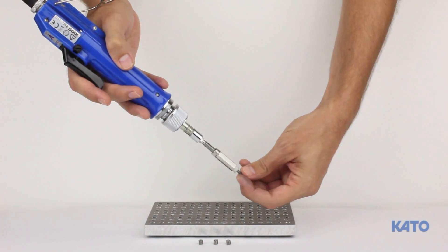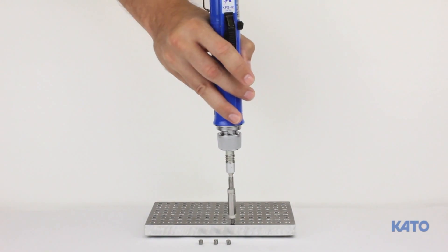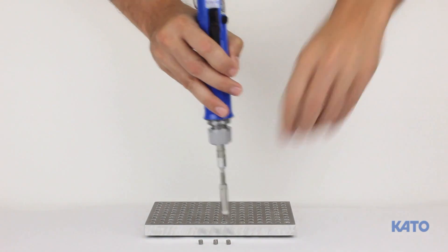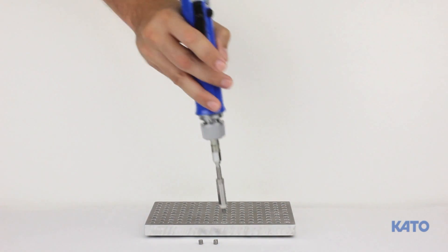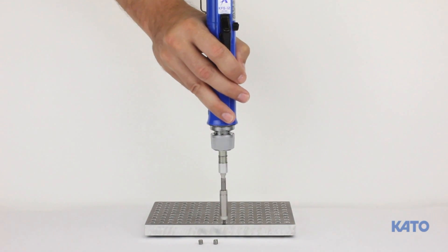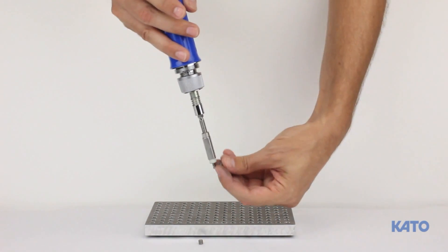As you can see, the Kato Hex electric tool is very fast and will greatly increase productivity when compared to manual installation. It's quiet, clean, easy to set up, and easy to use.